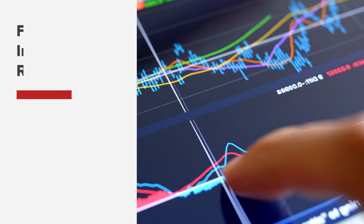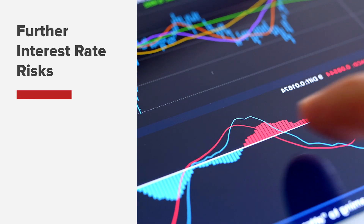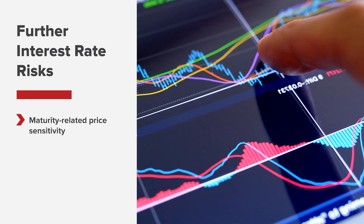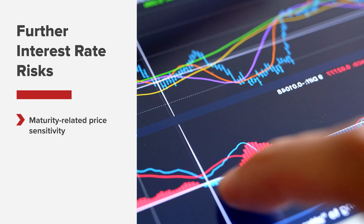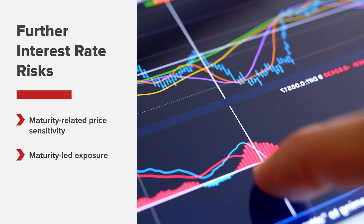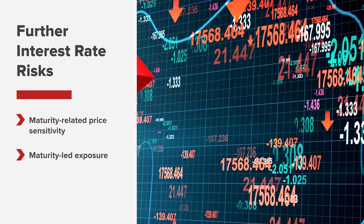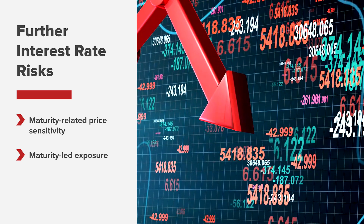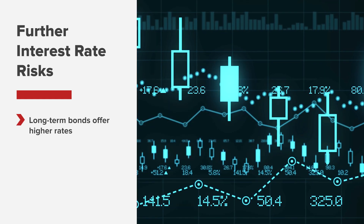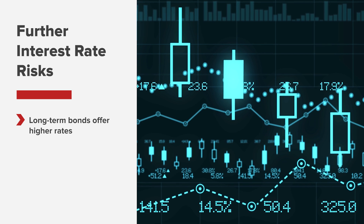It is also important to note that since corporate bonds have an inverse relationship with U.S. Treasuries, the interest rate risks faced by holders of government debt, including maturity-related price sensitivities to interest rate changes, are also inherent in corporate debt holdings. Moreover, the longer a bond is held to maturity, the more exposure the investor has to interest rate risk, as well as to fundamental changes that may lead to credit rating downgrades or defaults. To compensate investors for the interest rate risk, long-term bonds generally offer higher interest rates than short-term bonds of the same credit quality.